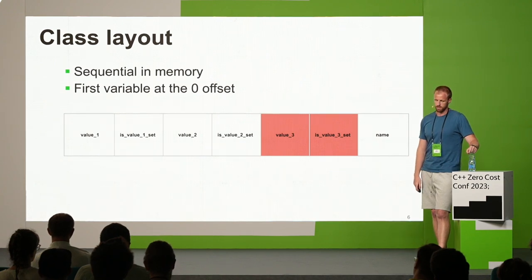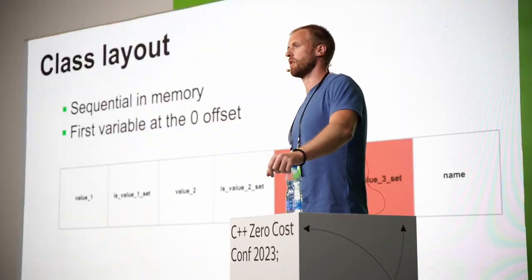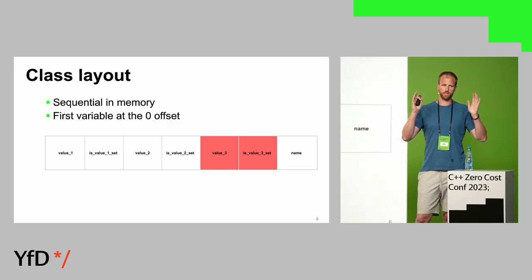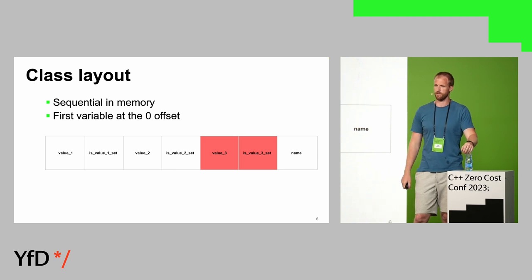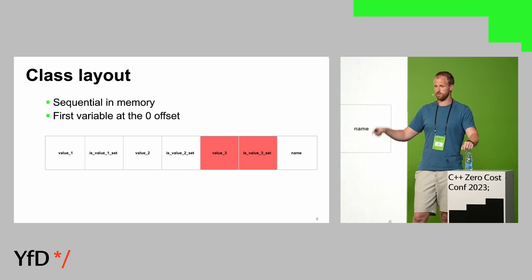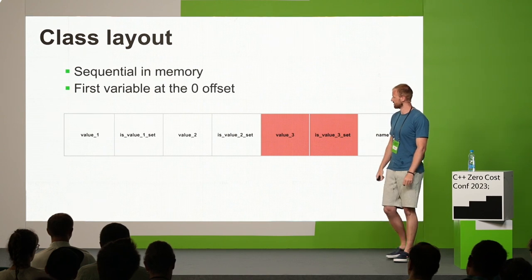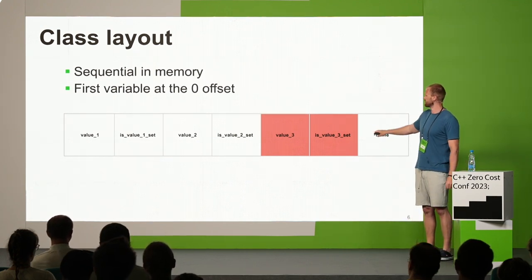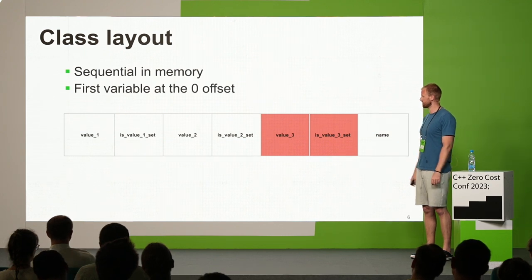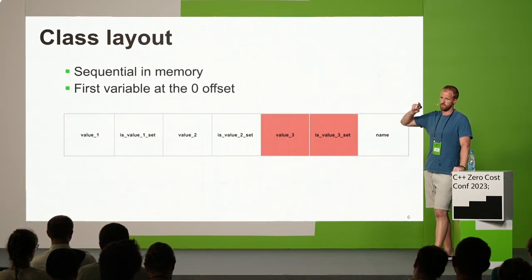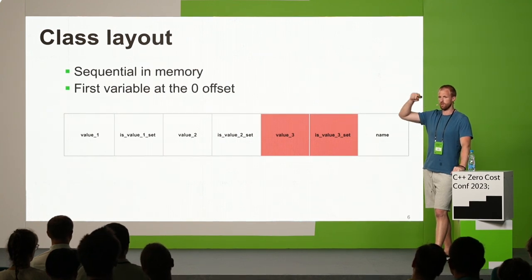C++ guarantees that an object of a certain type is going to be sequential in memory — the object takes just one chunk of memory and has everything there; it's not cut into pieces. The first member variable is going to be at zero offset from the position of the object itself. The class is laid out in memory with member variables in the order in which they are declared.